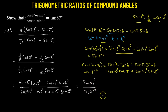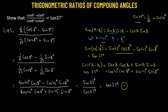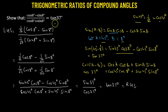The ratio of sine to cosine gives us the tangent function. So we get tangent of 37 degrees, which is the expression on the right-hand side. We have hence successfully shown that the left-hand side of the expression equals the right-hand side, which is tangent of 37 degrees.